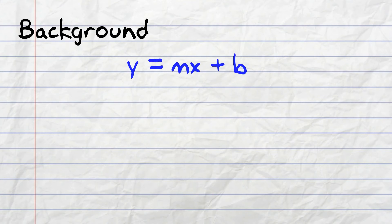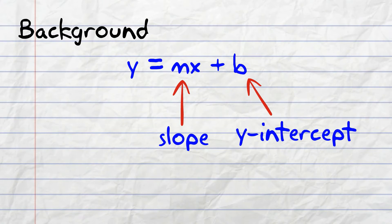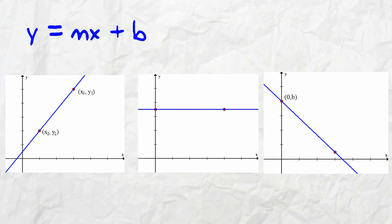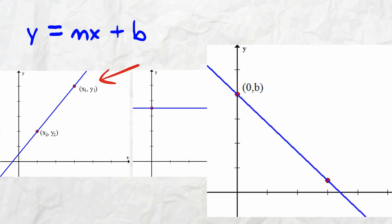Here's a little background. y equals mx plus b is the equation of a straight line, where m is the slope and b is the y-intercept. Here's a few different examples.